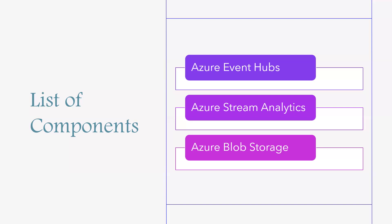Let me talk a little about these services before I move to the architecture part. Azure Event Hubs is a real-time streaming platform and event ingestion service capable of receiving and processing millions of events per second. Event Hubs can also process and store events, data, or telemetry produced by distributed software and devices.